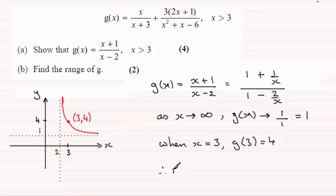I'll just put in here that when x equals 3, just to remind you, g of 3 equaled 4. So therefore the range is that g of x can be greater than 1 and less than 4 for x greater than 3. I hope you can see it from the graph here, and I do stress I feel it's so important to be able to understand the graph when you're working out range and domain questions.